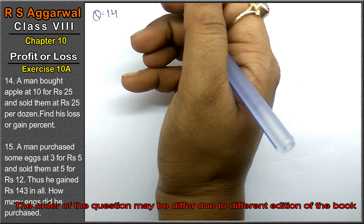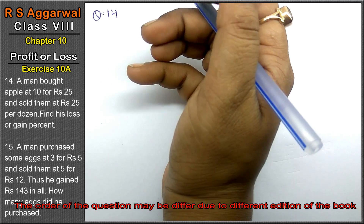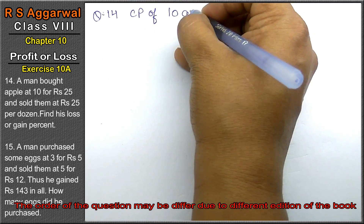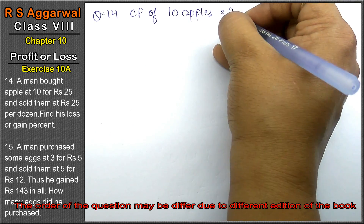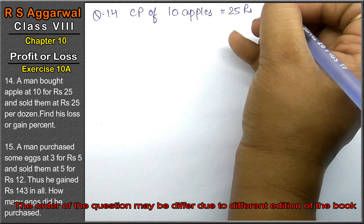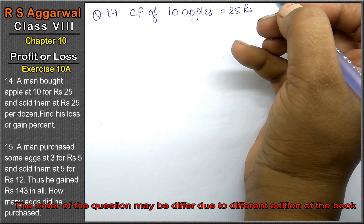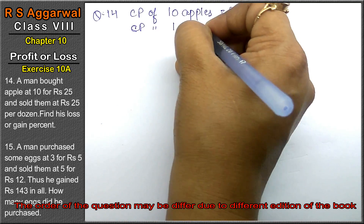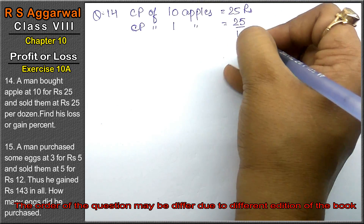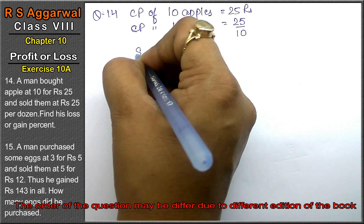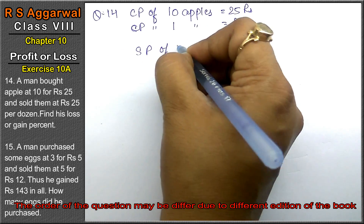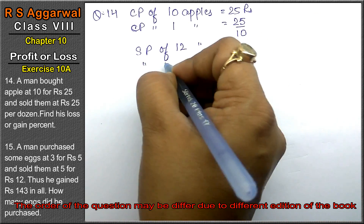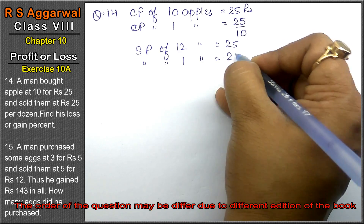Question 14: A man bought apples at 10 for rupees 25, so cost price of 10 apples equals 25 rupees. And sold them at 25 per dozen. The cost price of one apple is 25 upon 10. SP of 12 apples equals 25, so SP of one apple is 25 upon 12.